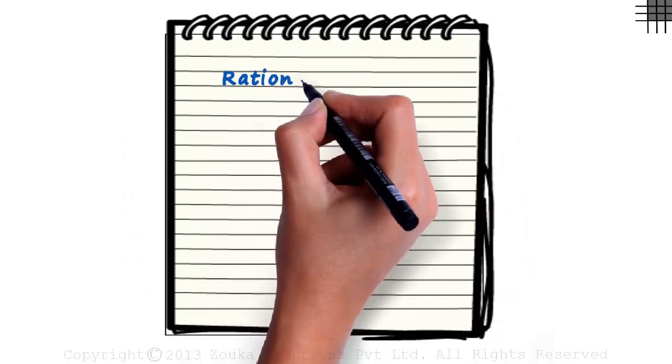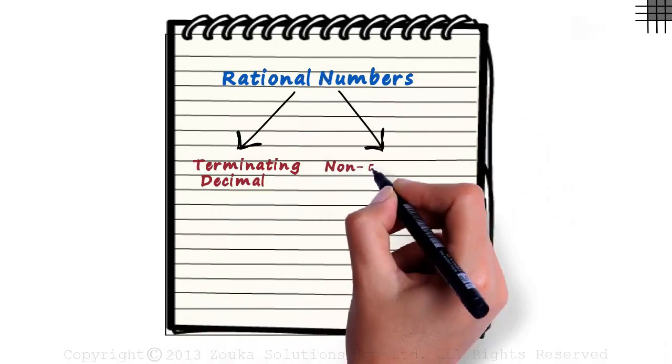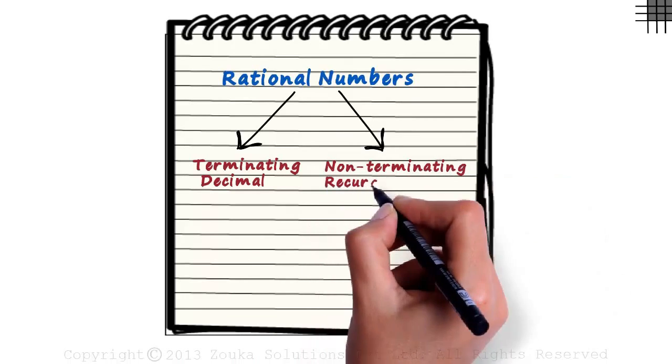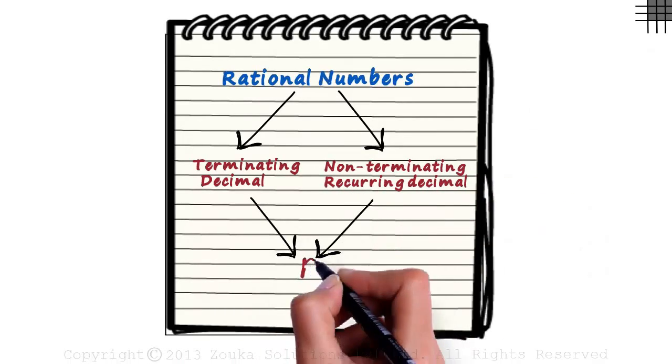We have seen that rational numbers comprise of terminating decimals and non-terminating recurring decimals. In this video, we will see how we can convert a decimal number to the rational form P by Q.